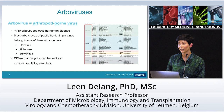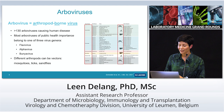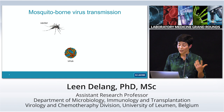Arboviruses are actually a very diverse group of viruses. They belong to different virus families, but most arboviruses of public health importance belong to three virus genera: the flaviviruses, the alphaviruses, and the bunyaviruses. You can also see in the table that not only mosquitoes transmit arboviruses, but also other arthropods like ticks and sand flies.